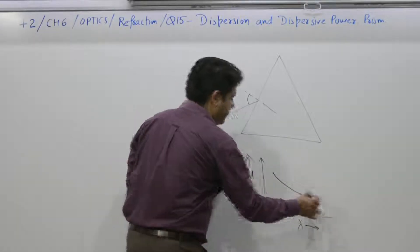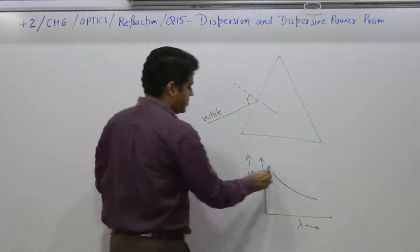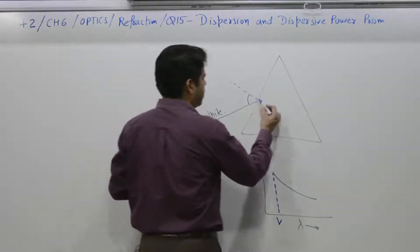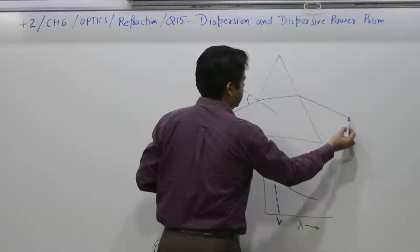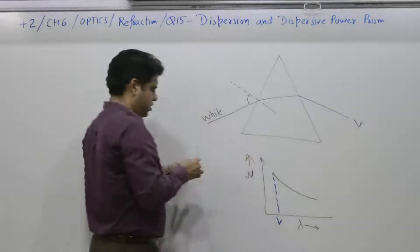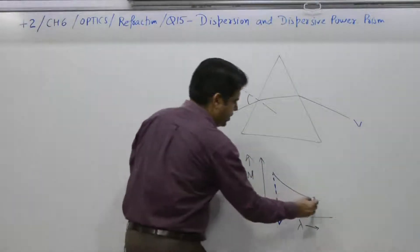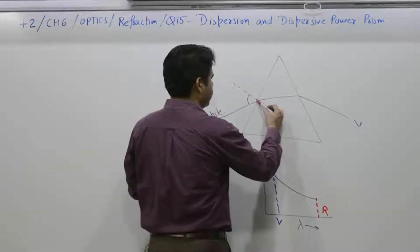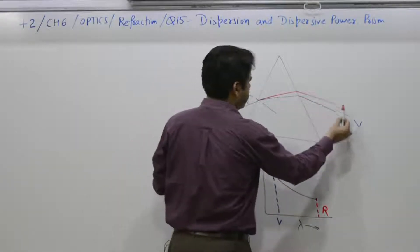For violet light, nu is maximum. That is why violet will suffer maximum deviation. For red light, nu is minimum, so it will suffer minimum deviation.